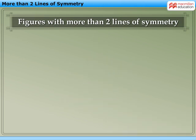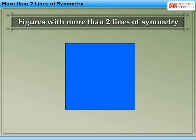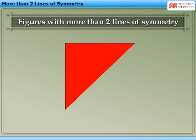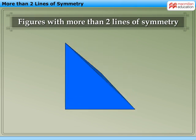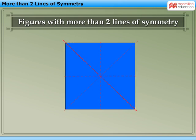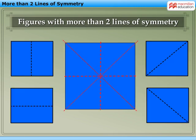In the same way, let us consider a square piece of paper. Fold it into half vertically, horizontally, and also along both the diagonals as shown here. Observe that every time, we get two identical parts.